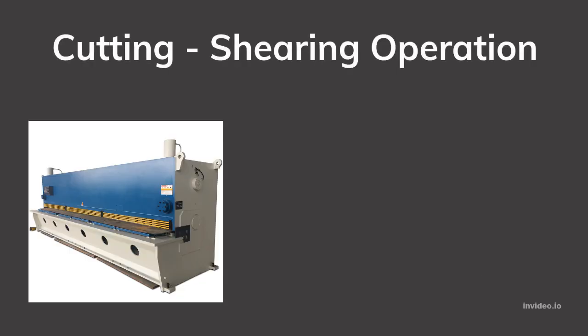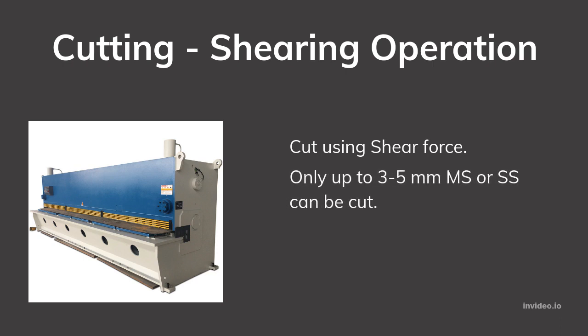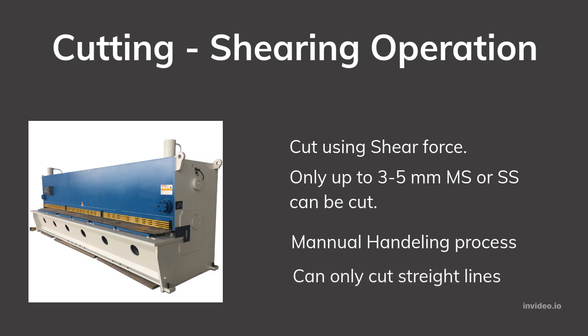Let's look into cutting through shearing operation. In this method, sheets are cut using a shear force. Thin metal up to 3 to 5 mm thickness mild steel or stainless steel can be cut using this method. The limitations are it has a manual handling process and can only do straight cuts.